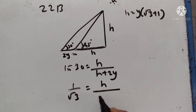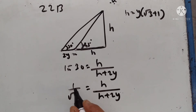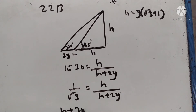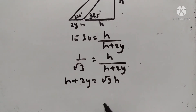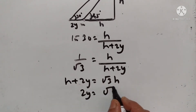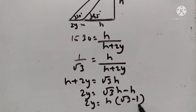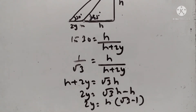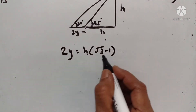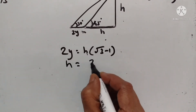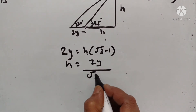So, h plus 2y goes to the numerator and square root of 3 goes to the numerator. h plus 2y is equal to square root of 3 times h. Therefore, 2y is equal to square root of 3h minus h. h is common here: square root of 3 minus 1. So, 2y is equal to h into square root of 3 minus 1. Therefore, height h is equal to 2y upon square root of 3 minus 1.